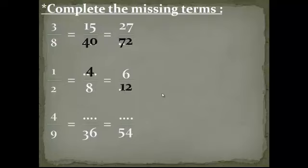The king fraction is 4 over 9. 9 becomes 36, so we multiply by 4: 9 by 4 equals 36, so 4 by 4 equals 16. Again, king fraction: 4 over 9 equals space over 54. 9 becomes 54, so we multiply by 6: 4 by 6 equals 24.